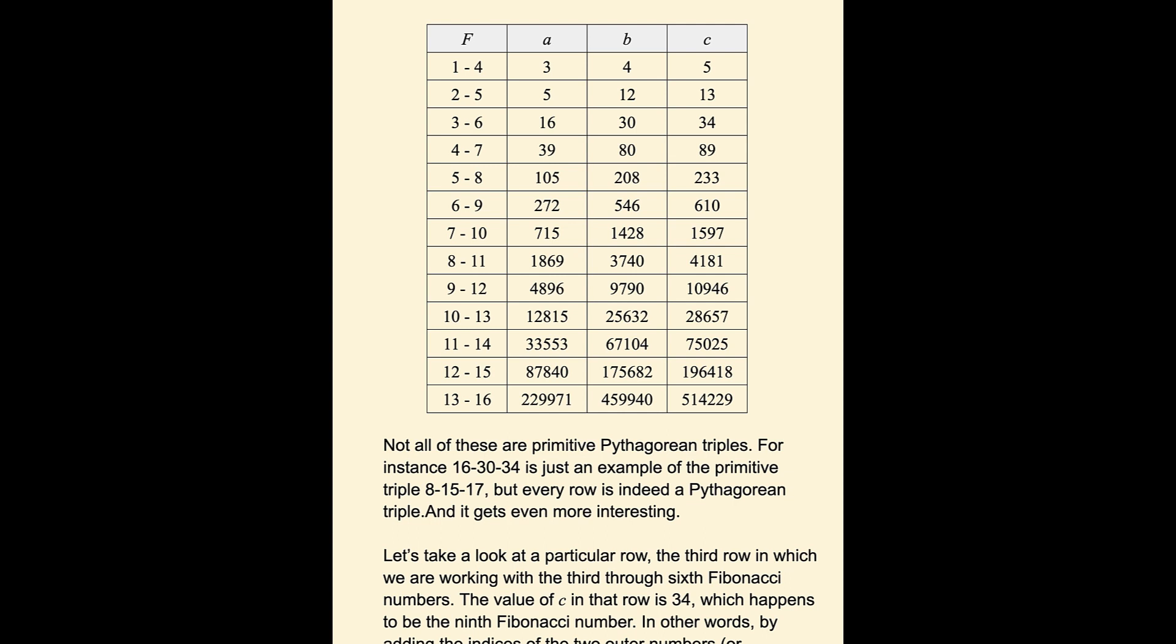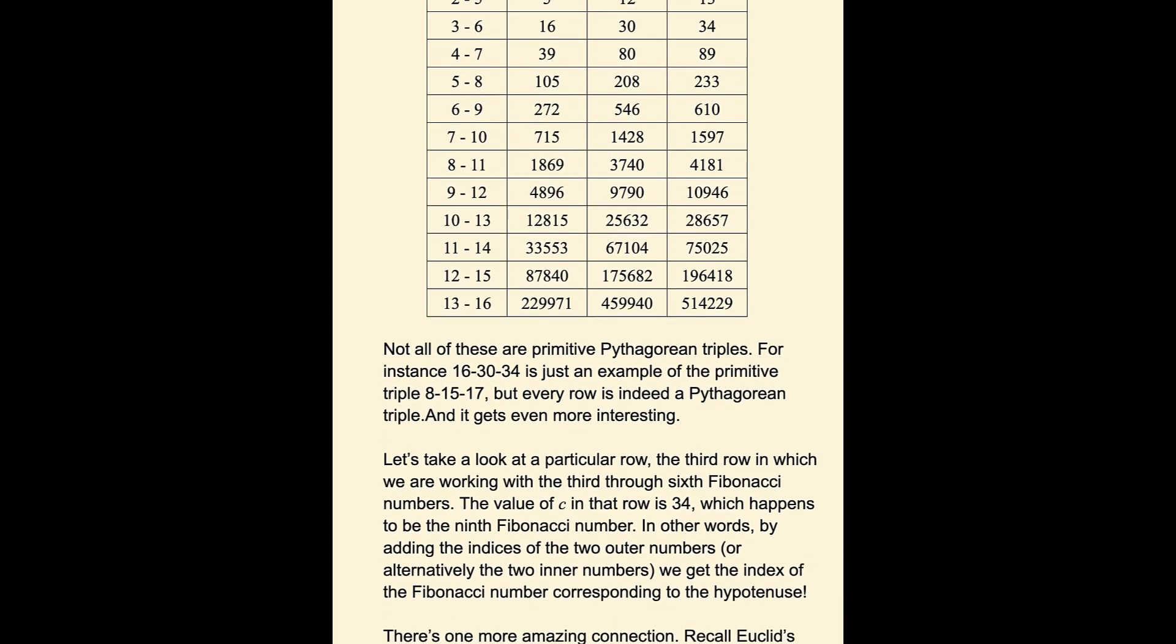So that would be the one that generated the 16, 30, 34. The value of C in that row is 34, which happens to be the ninth Fibonacci number. In other words,